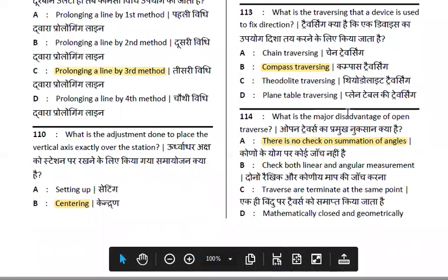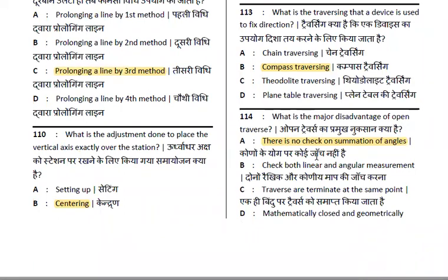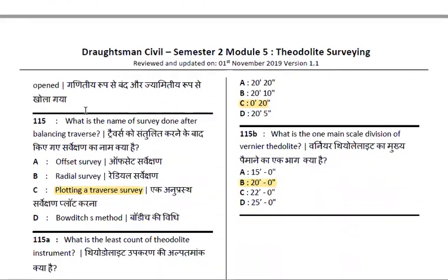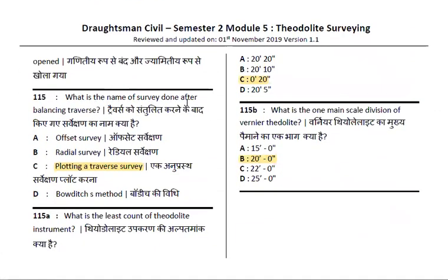Next: what is the major disadvantage of open traversing? Open traversing has no checking of the summation of angles. In a closed traverse, you check from the starting point to the ending point. In open traversing, this check is not possible. Next: what is the name of the survey after balancing traverses? The surveying name for plotting a traverse survey follows the traversing law.